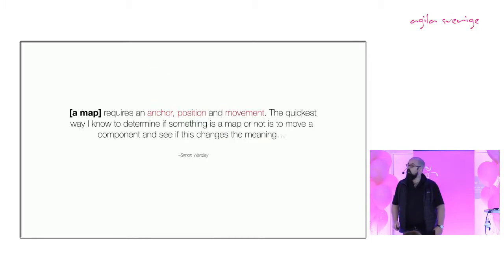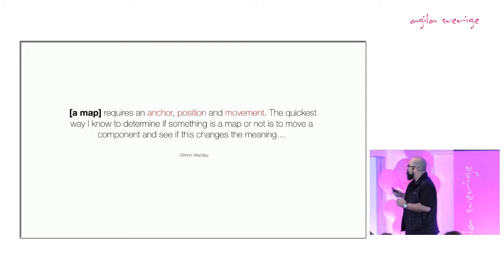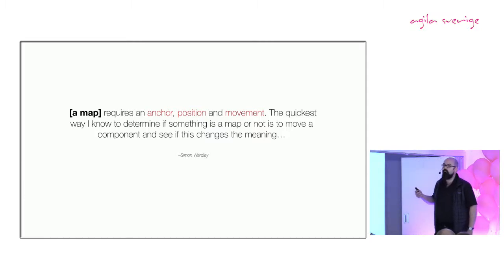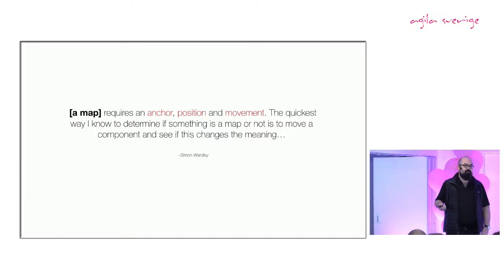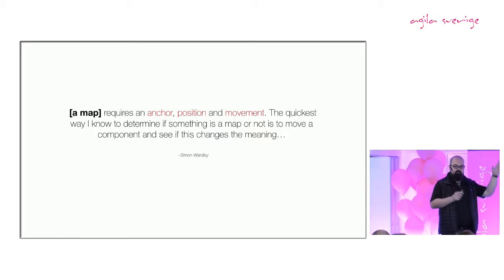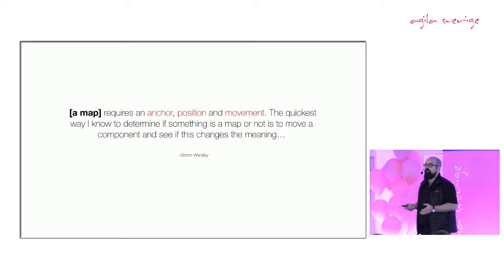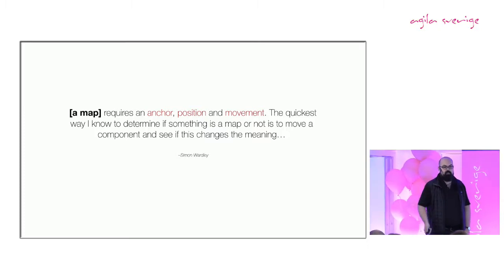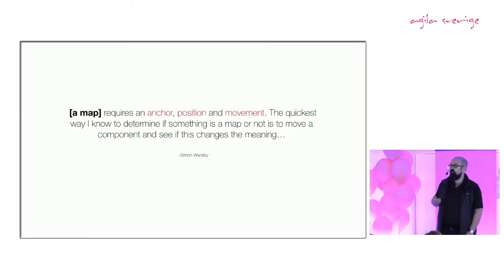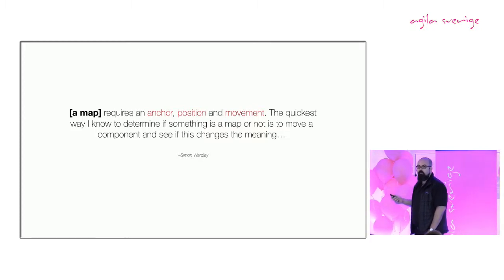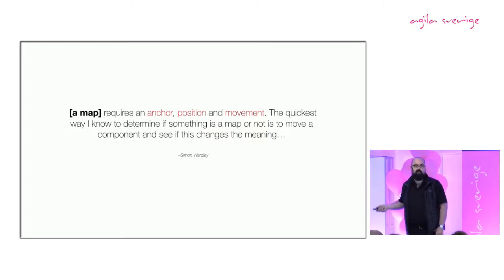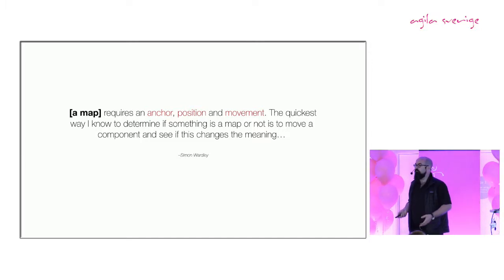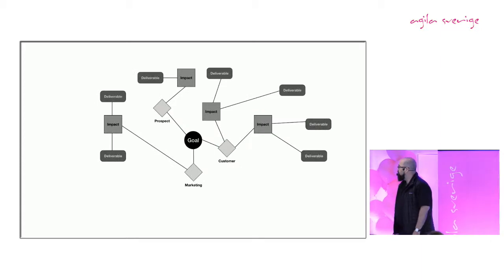But is an impact map actually a map? It's not. One of the best definitions I've seen for what a map actually is is a map requires an anchor, a position, a movement. And one of the easiest ways to understand if something's a map or not: pick it up and move it around on the space in front of you and see if it affects the information you're showing. This definition is from a guy called Simon Wardley who is an expert in mapping. He's got his own kind of mapping called Wardley mapping. If you haven't looked into it before I recommend it. It's a really good way of understanding the value chain. But his point here is an awful lot of things we talk about when we say a map is not actually a map. They're just diagrams.